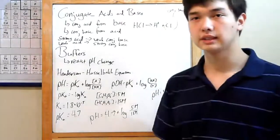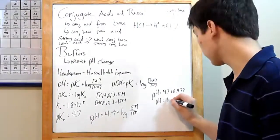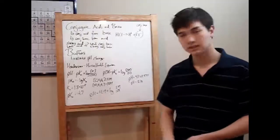All you need to do is add, and you come up with your pH for your buffer solution, 5.182. That's all there is to it.